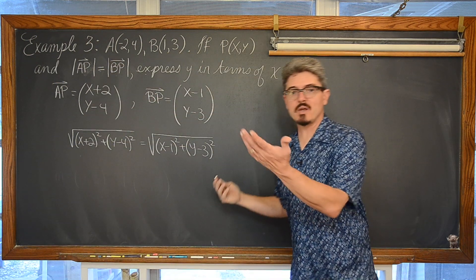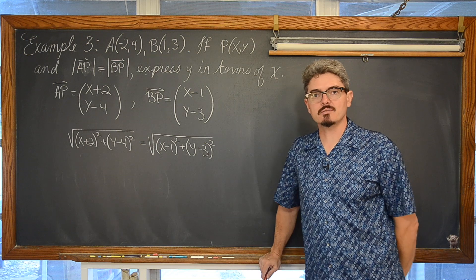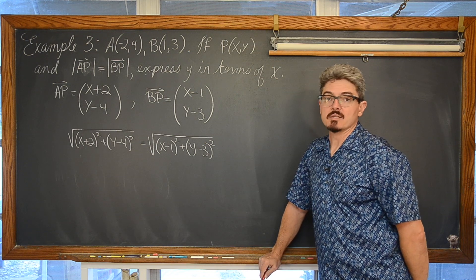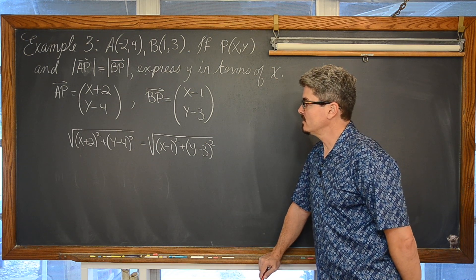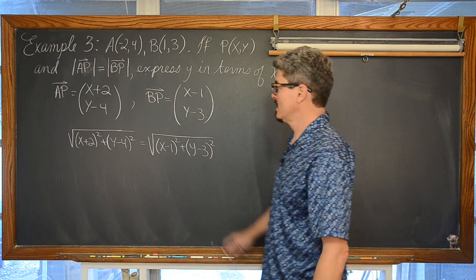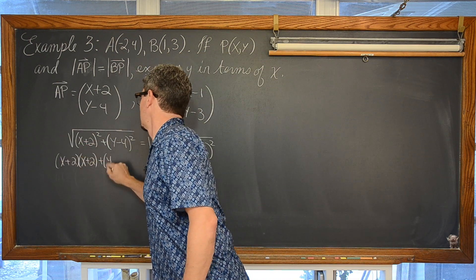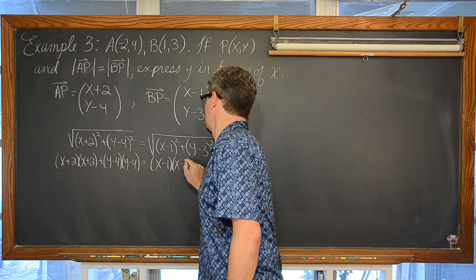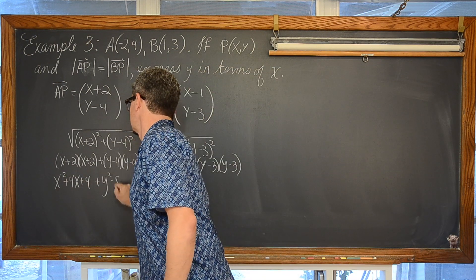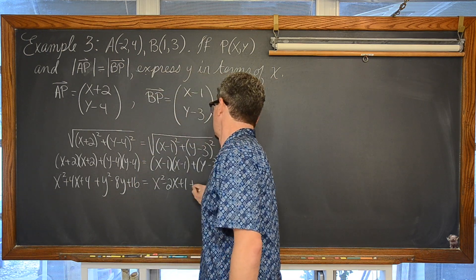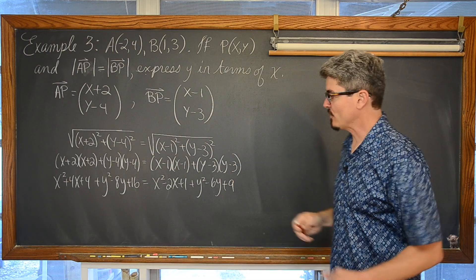Well, we just have to solve this equation. And we have an equation that has square roots on both sides. So we are going to just simply get rid of those, square each of these binomials, and go from there.